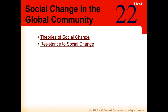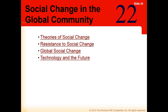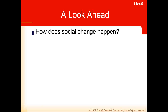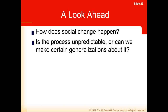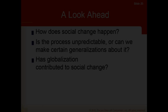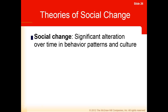Chapter 22 is Social Change in the Global Community. We'll examine theories of social change, resistance to social change, social change on a global scale, how technology is changing things, and the idea of transnationals. The only thing we can say is constant about social change is that it's always going on — there is significant alteration over time in behavior patterns, culture, values, and attitudes.